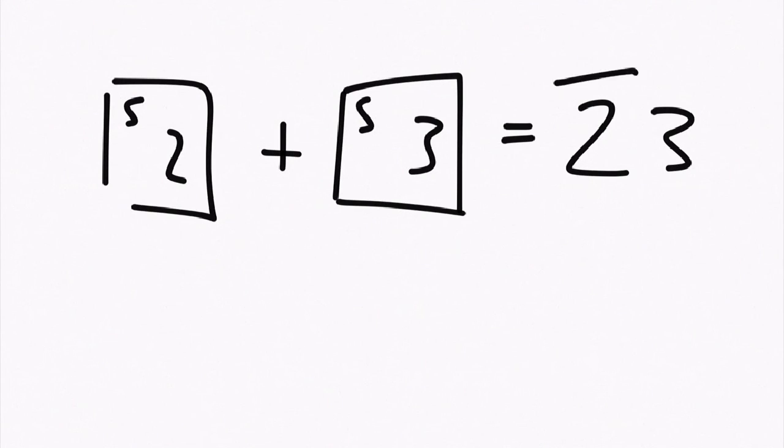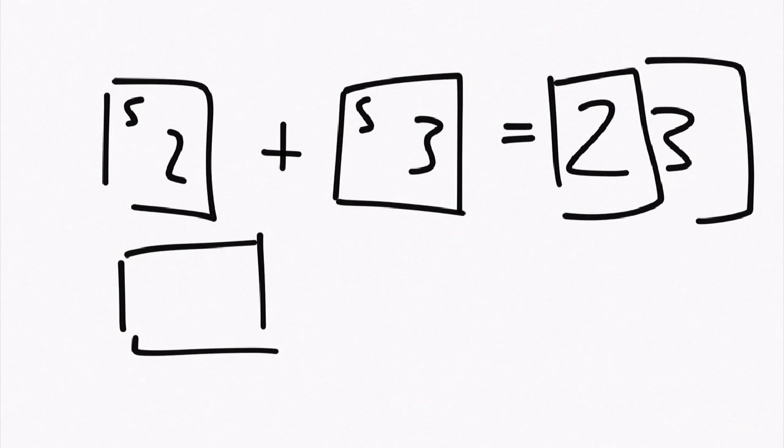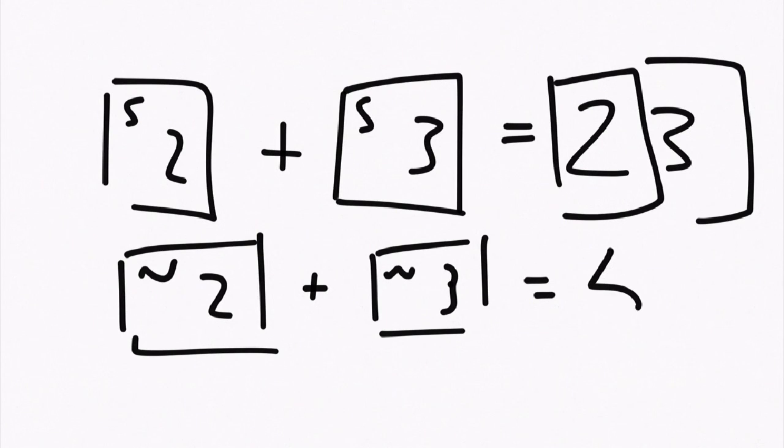Whereas if you've got a number two plus a number three, that would be equal to what you expect, which is five. So that's the basis of variables, they store things.